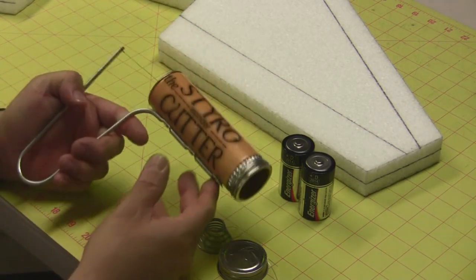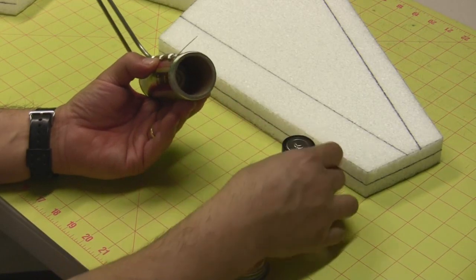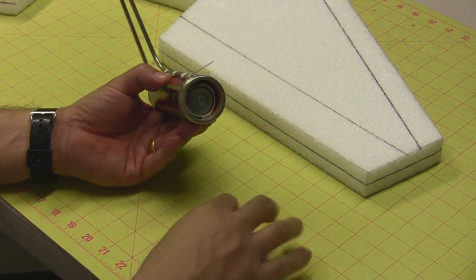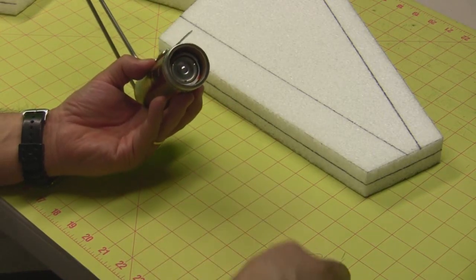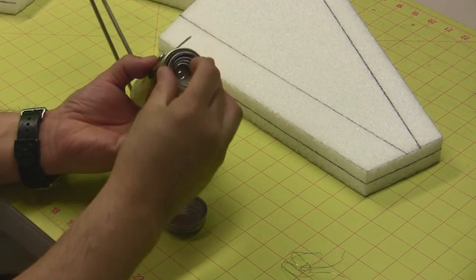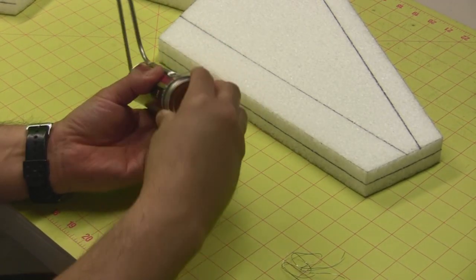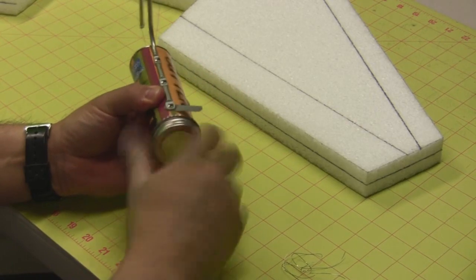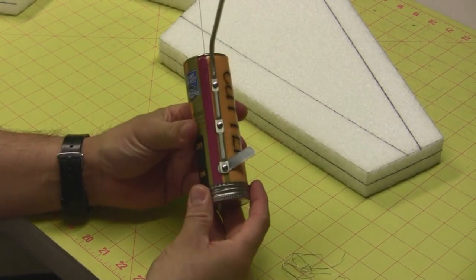Once you have the wire in place, all you need to do is take the two batteries, insert them, and next goes in the spring. Then just screw the cap on over the spring. And we're all put together now.